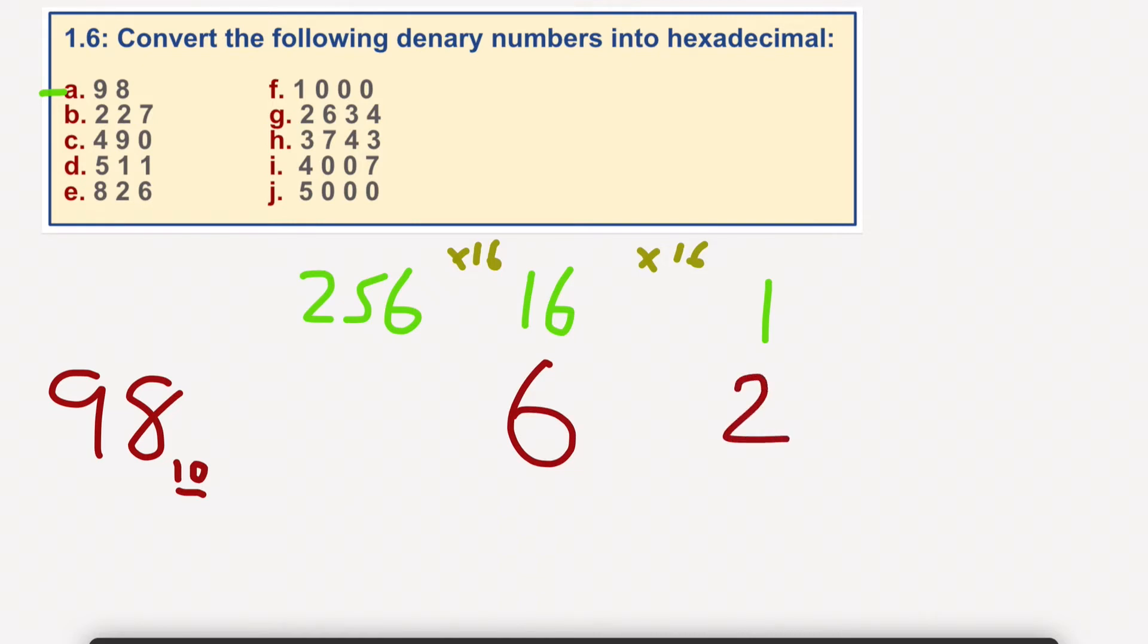So 98 would equal, in hexadecimal, 62. 6 times 16 equals 96, plus 2 times 1, equaling 2. So that would equal 98. Nice and simple.